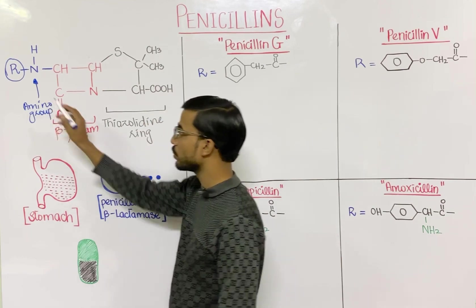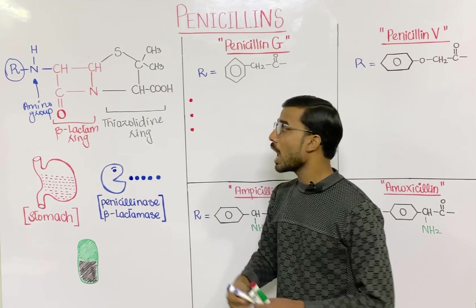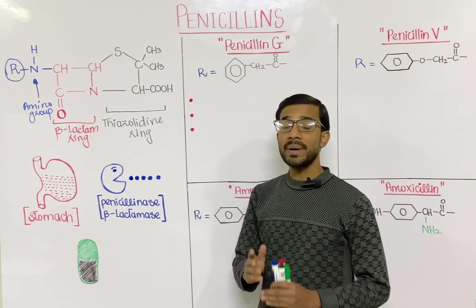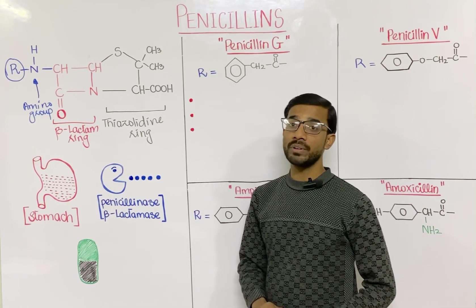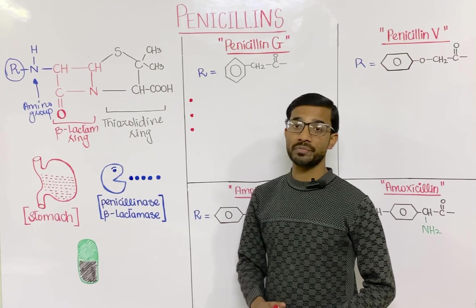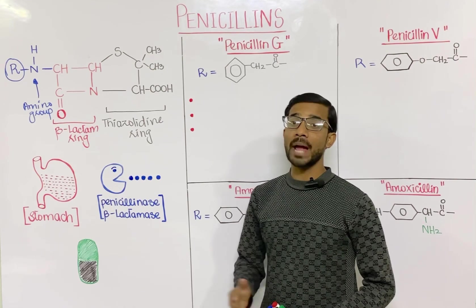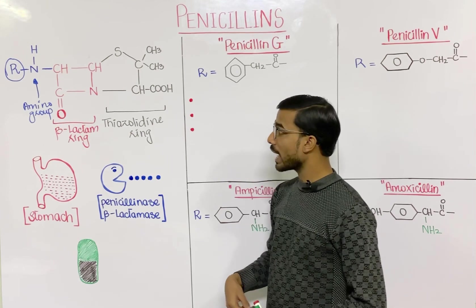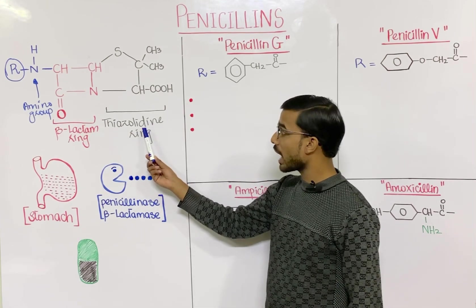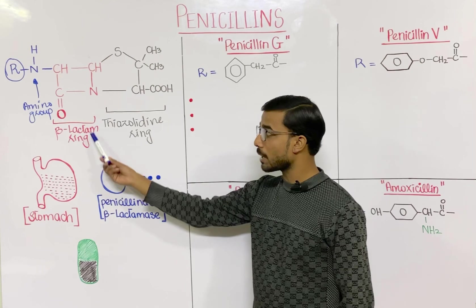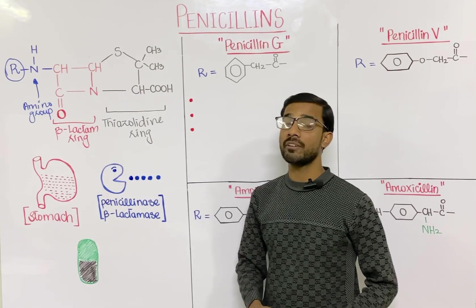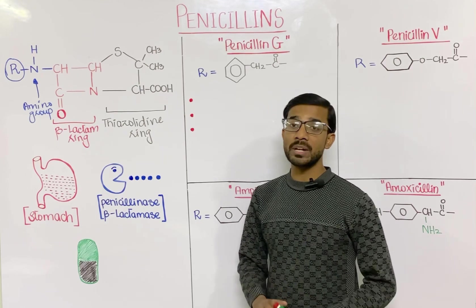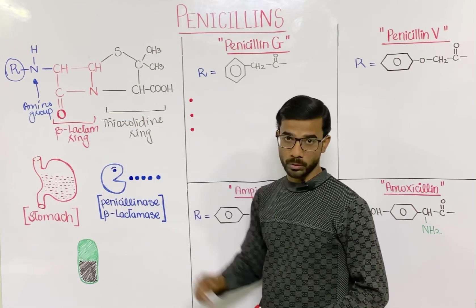And last, you will see the presence of the R group, or alkyl group. The alkyl group will decide the type of penicillin. Different types of penicillin have different R groups. Otherwise, all three structures — thiazolidine, beta-lactam ring, and amino group — remain the same in all penicillins. The difference will be at the R group.